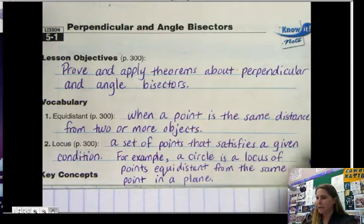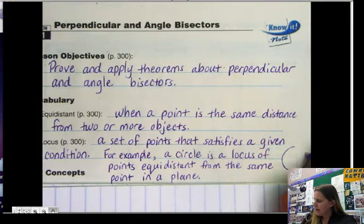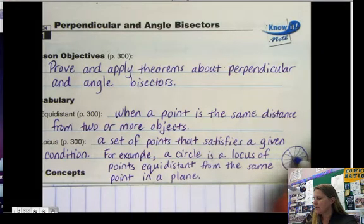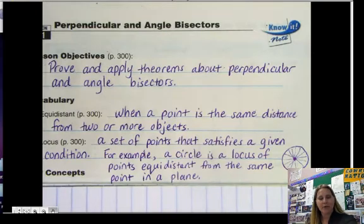So if we were to draw a circle, it's equidistant from the same point on the plane. Those equidistant parts are the radius, or radii.